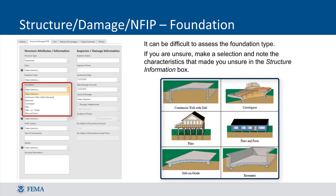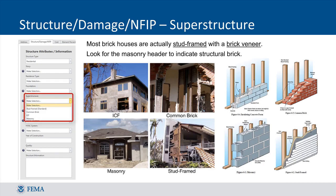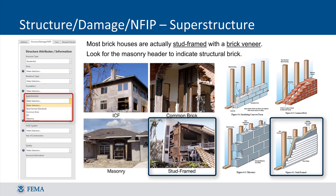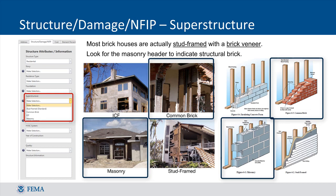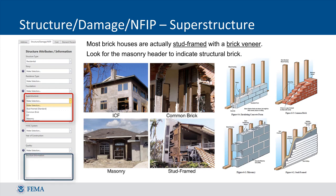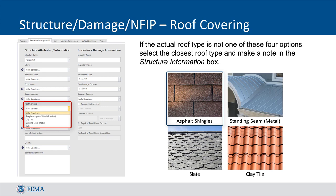Foundation types vary geographically. For instance, slab-on-grade foundations are very common in the southern U.S., whereas basement foundations may be the most common in the northern U.S. The superstructure data field offers four choices; most homes in the U.S. are stud-framed, although you may occasionally encounter a common brick or masonry home. If superstructure type is unclear, you can record your observations in the Structure Information text field. You can choose from four roof covering types; if the structure has two different types, select the type covering the majority of the structure and make a note. The most common roofing type in the U.S. is asphalt shingles.